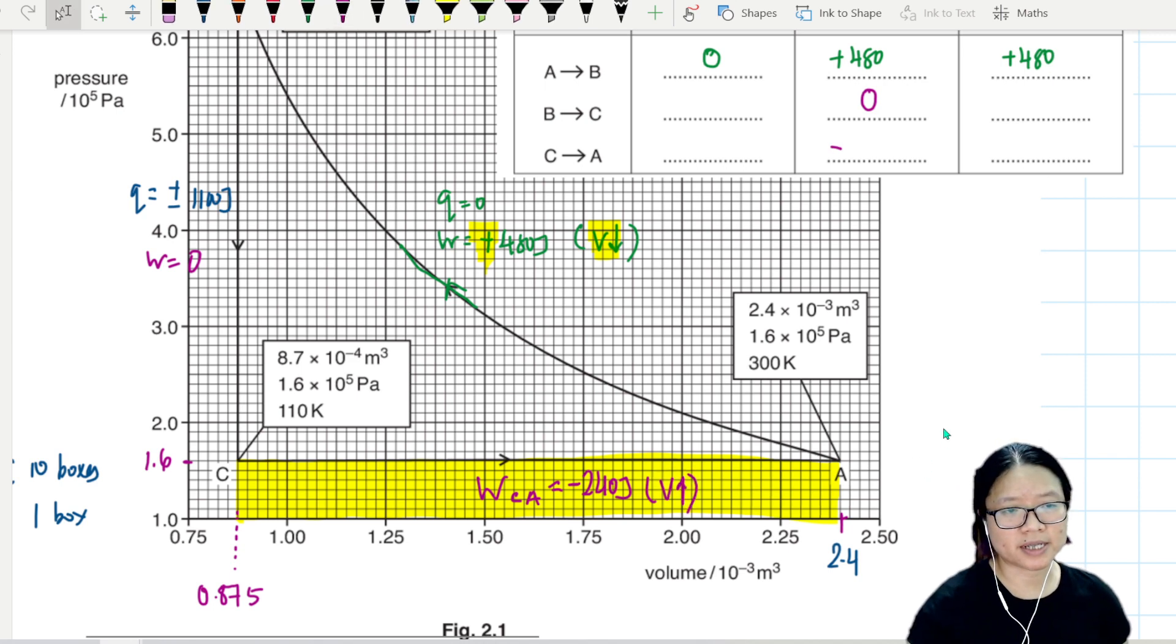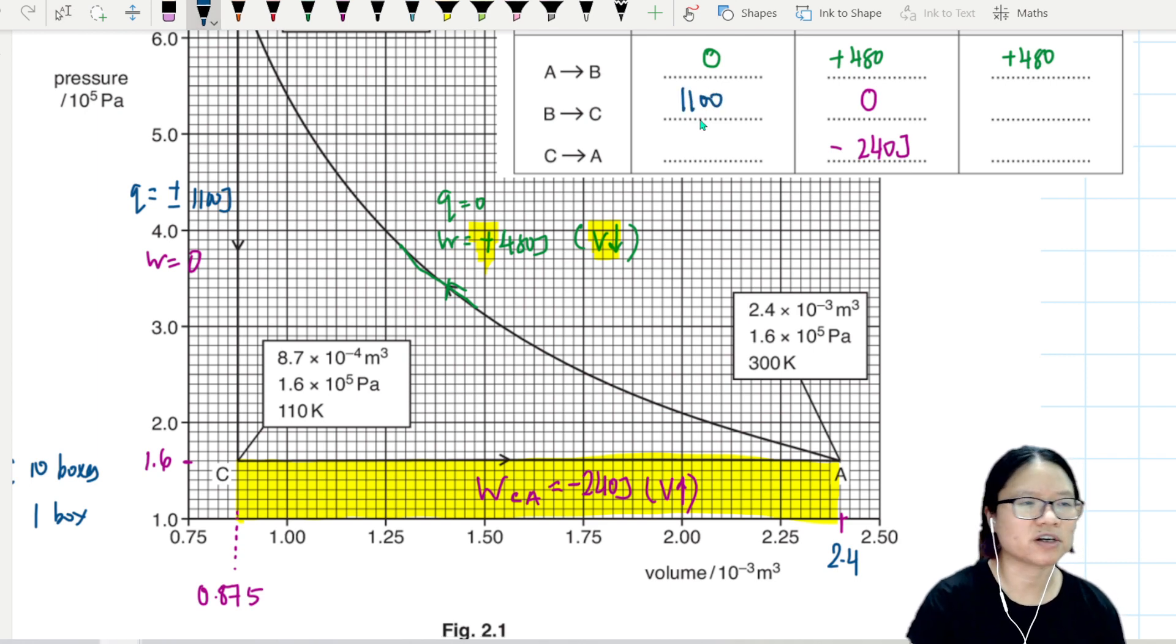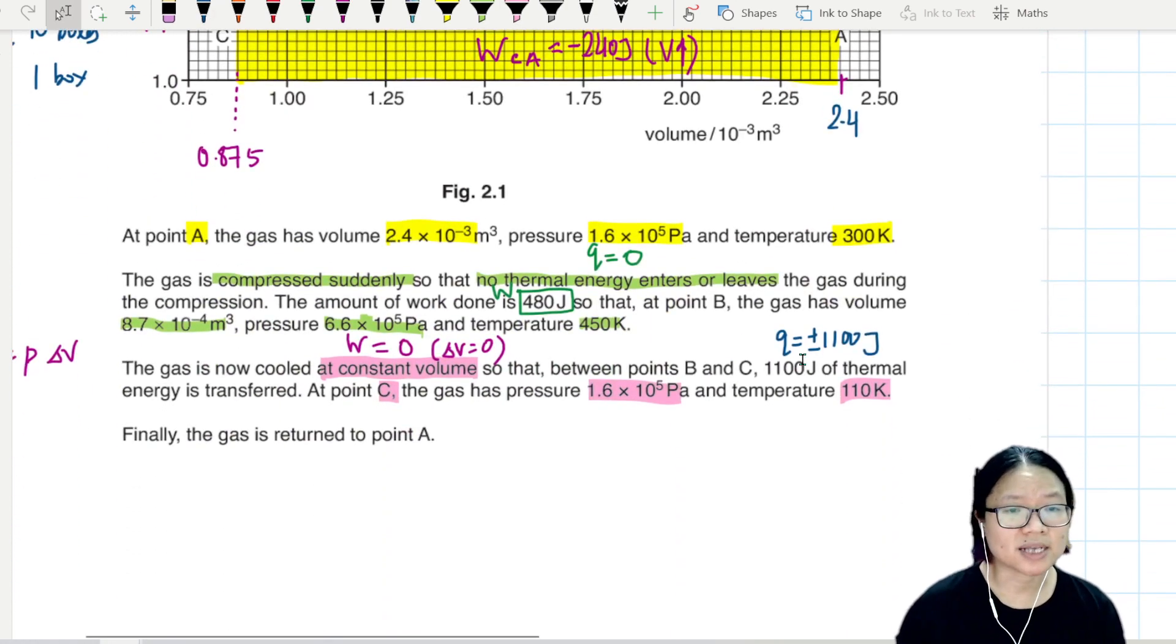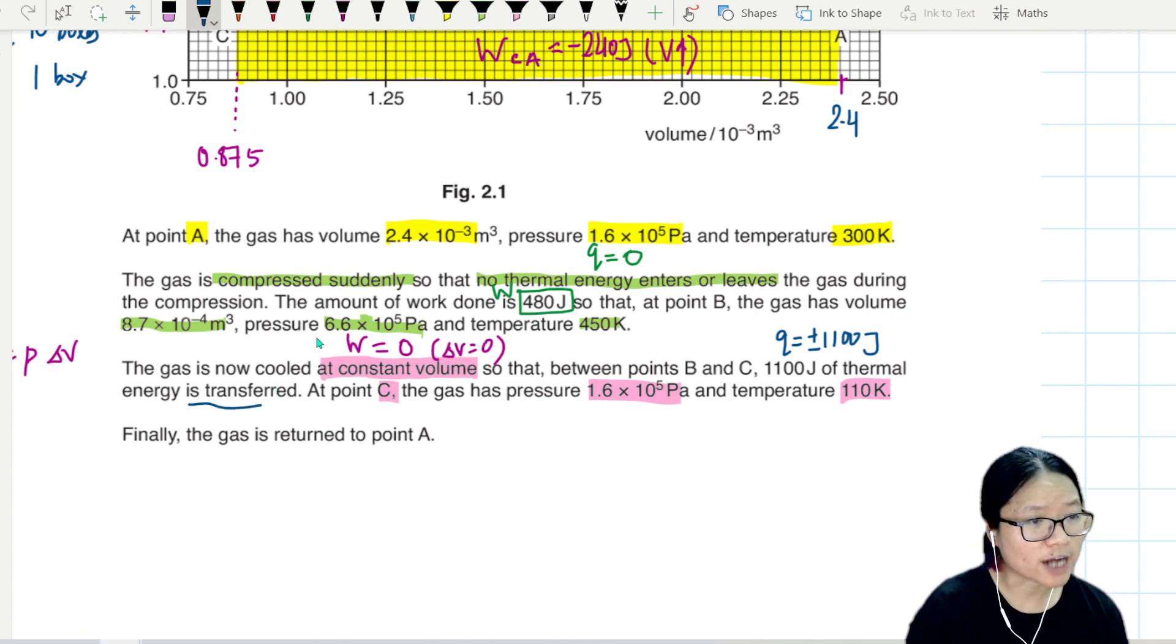But this one must be negative because volume increased. Volume increased, so this will be negative 240 joules. So right now what we have left is actually to fill in the blanks for the rest. Now I cannot avoid 1100. I need to put 1100 here and I will figure out whether it's positive or negative, because the question is very vague purposely. They say transfer, 1100 joules thermal energy is transferred in or out. They say transfer only.